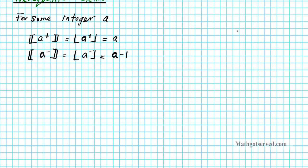Let's take a look at some examples. What if you were looking for the greatest integer function of three from the right? This basically means you get really, really close to three from the right — you can consider this as the greatest integer function of 3.0001. The biggest integer that's smaller than 3.001 is three, so you round it down to three.